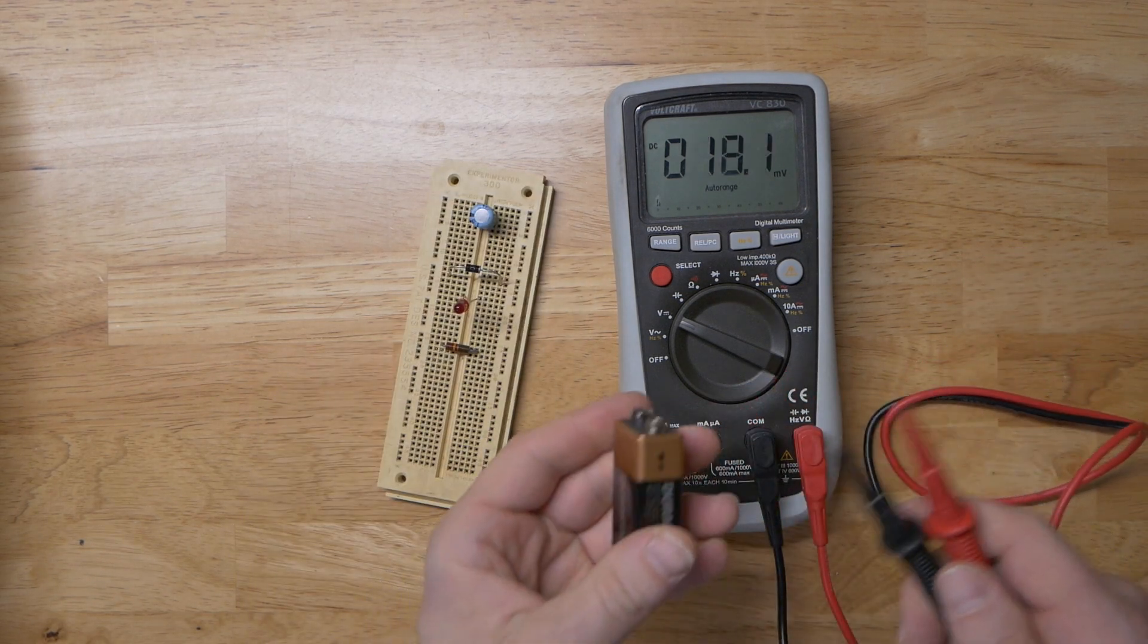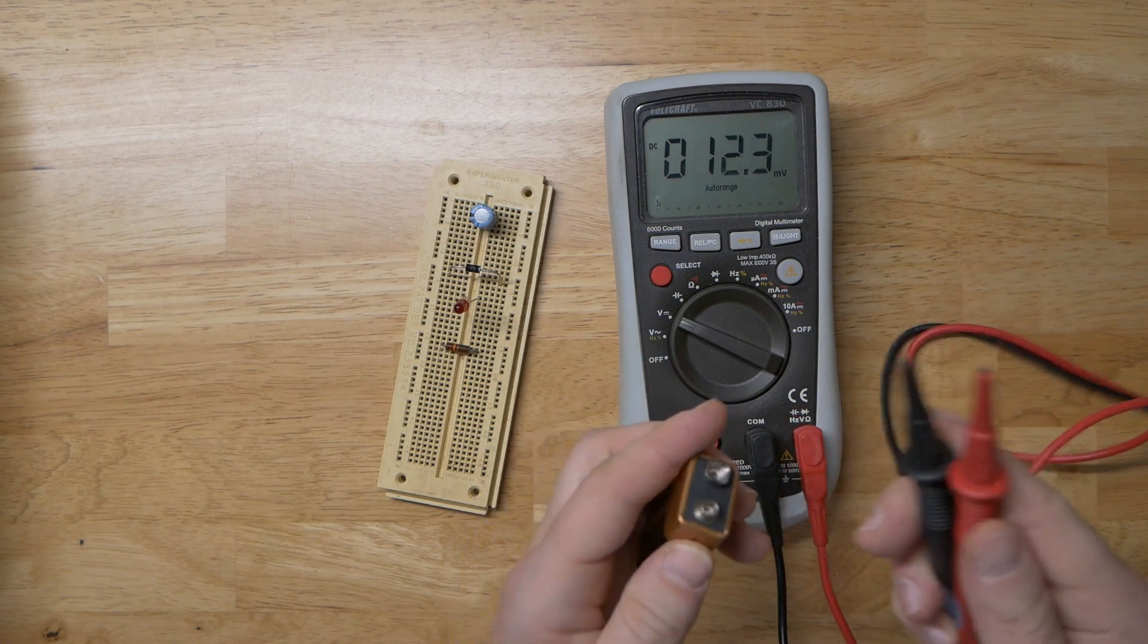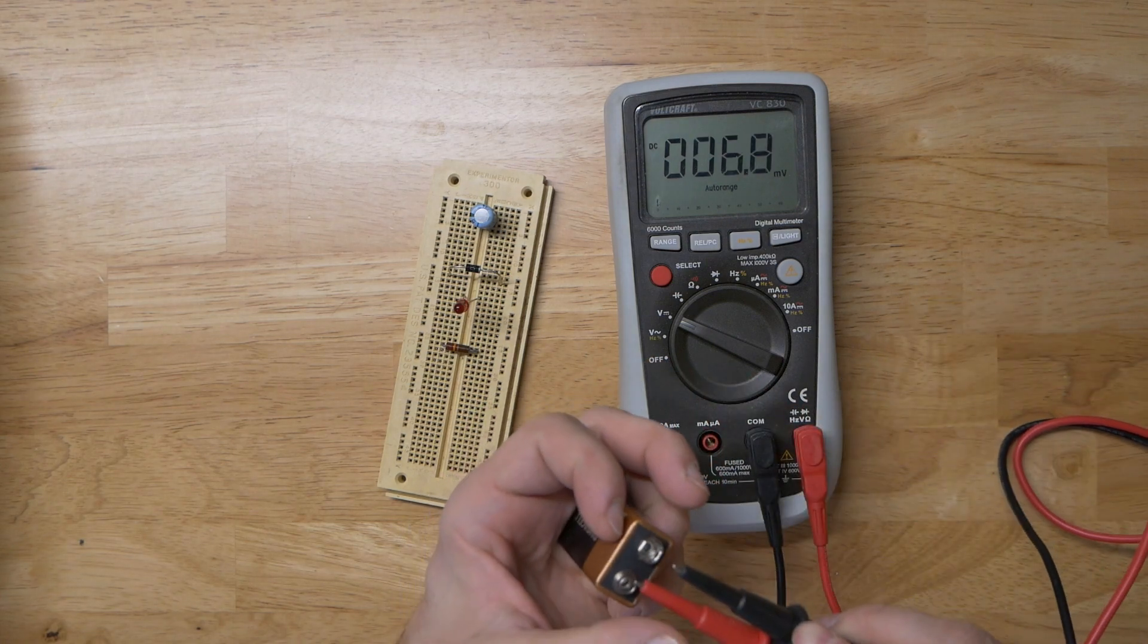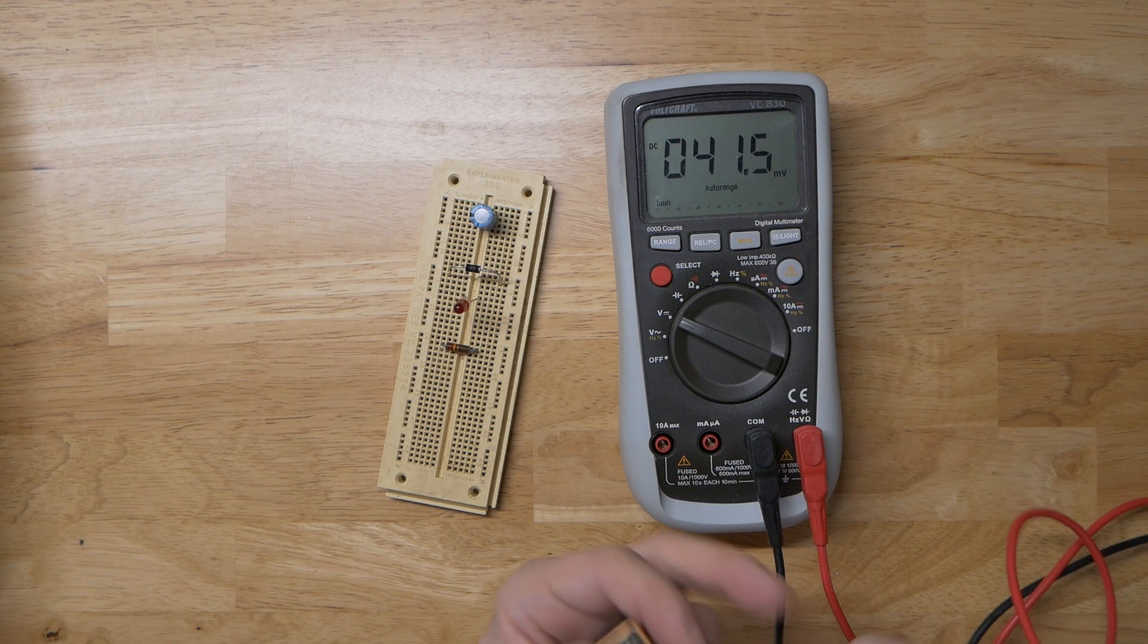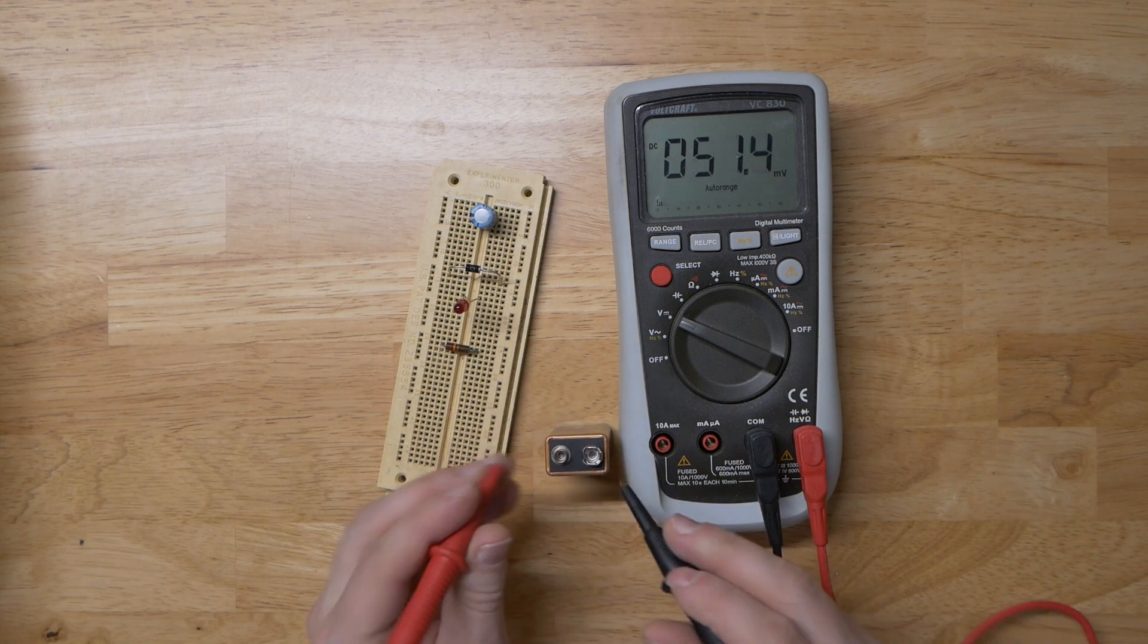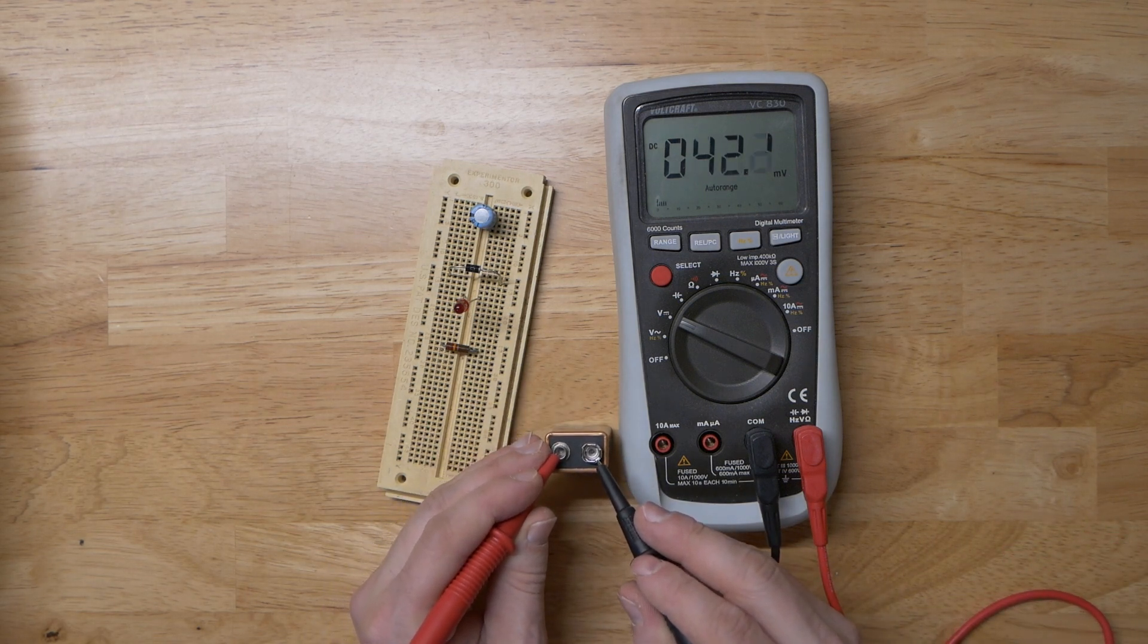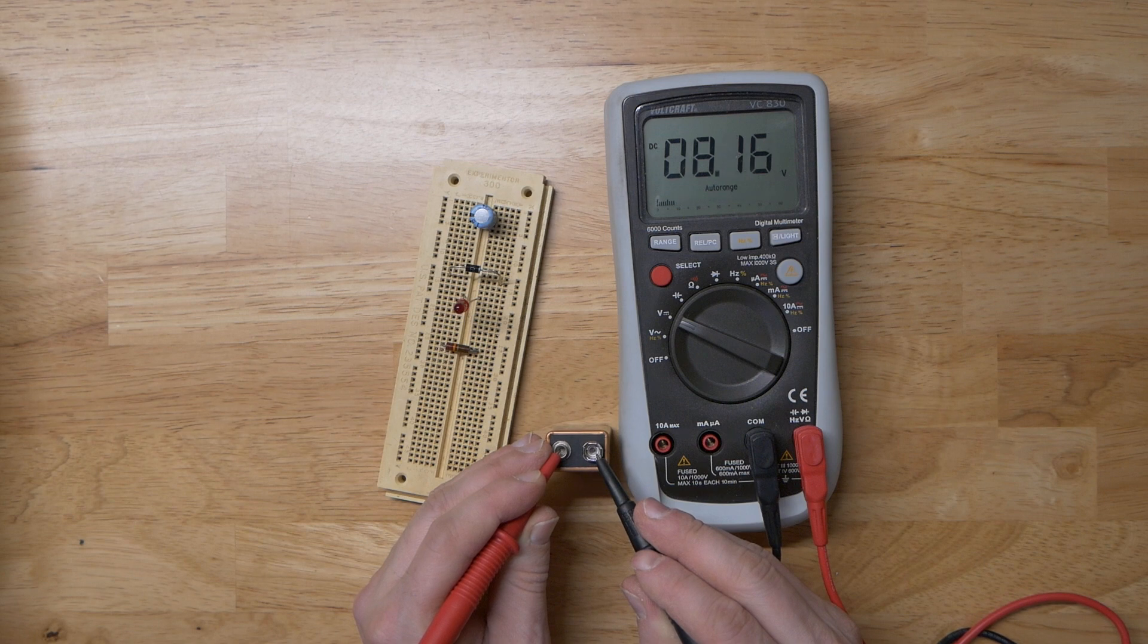So it's really pretty self-explanatory. You've got your positive side, your negative side. Red's positive. Black is negative. So this is the most common use of a multimeter, checking batteries. This could be a car battery, a little button cell. At 8.13 volts, so it is low.